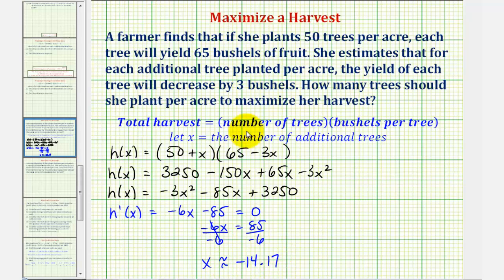And since x is the number of additional trees, we're going to round to the nearest whole number, so we'll use a critical number x equals negative 14. But we should still verify that the function is maximized, not minimized at this value.